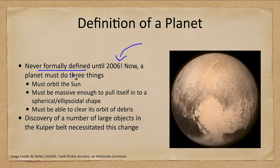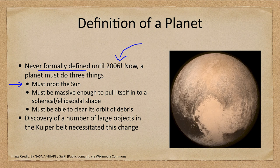What is a planet? It was never formally defined until 2006. In 2006, the International Astronomical Union decided that a planet must do three things. First, it must orbit the Sun — that removes moons from being planets, even if they are larger than some of the planets. We do have at least one moon that is larger than Mercury, but if it doesn't orbit the Sun, it's not a planet.